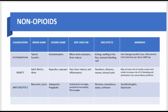This chart of non-opioids lists the classification, brand name, generic name, best uses, side effects, and warnings. Acetaminophen — otherwise known as Tylenol or Excedrin — is best used for minor aches and pains and also as a fever reducer. Some side effects include itching, swelling, stomach bleeding, and rash. An important warning is possible liver damage, especially if you drink alcohol, so you want to limit your total dose to 2,000 mg per day.